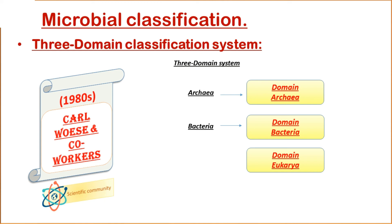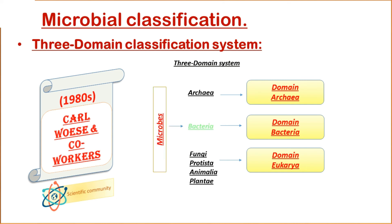The other four kingdoms — Kingdom Fungi, Kingdom Protista, Kingdom Animalia, and Kingdom Plantae — are placed together in Domain Eukarya. Microorganisms are placed in this system across four kingdoms: Kingdom Bacteria, Archaea, Fungi, and Kingdom Protista.